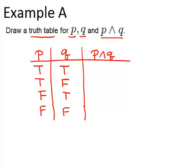Once you've done that you want to analyze P and Q. So for P and Q to be true, remember that's the symbol for and, both P and Q have to be true. So if P is true and Q is false then P and Q will be false. They both have to be true for P and Q to be true.